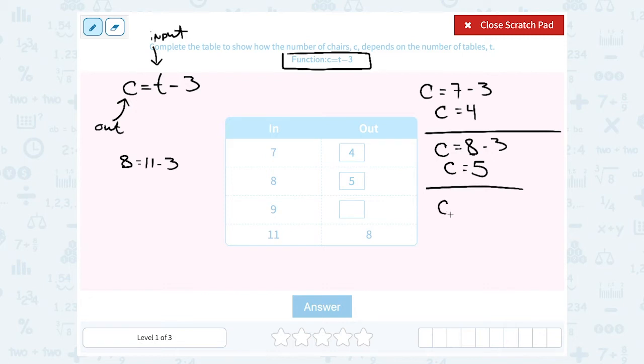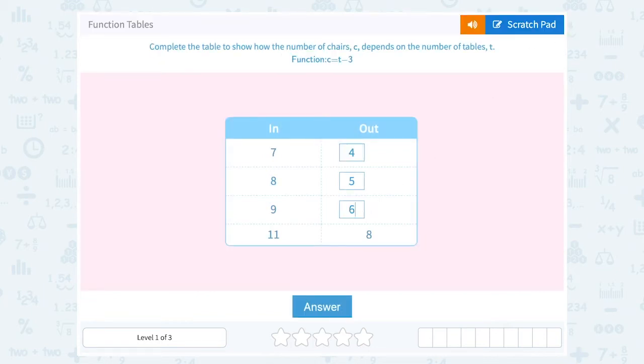This one would be c is equal to 9 minus 3, putting 9 where the t is for our input. Well, 9 minus 3 is 6. So notice when they say input and output, input is the number you're putting into the equation, and output is the answer that you get.